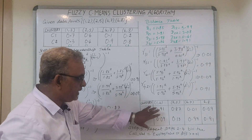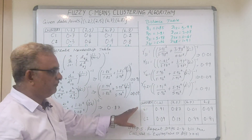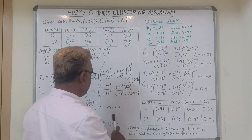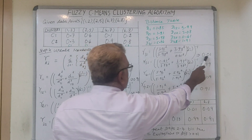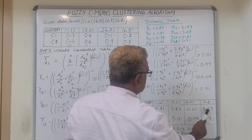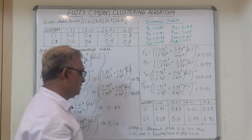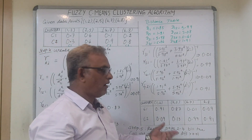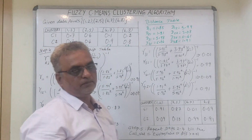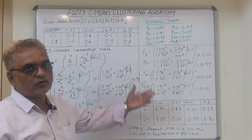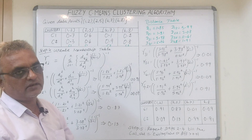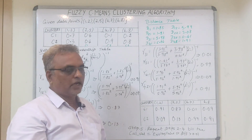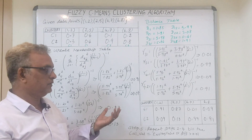The membership table is now updated with the newly calculated values: 0.87, 0.13; 0.11, 0.01 (corrected); 0.99; 0.09, 0.91. The final step is to repeat steps 2 to 4 until the calculated value equals the existing value, or the difference is less than 0.01 — the tolerance value. We continue until convergence. I hope you understood the concept. I explained the algorithm and also illustrated it with this example. Thank you.